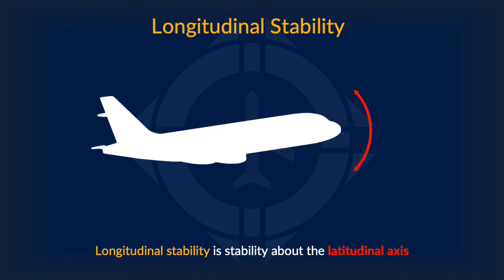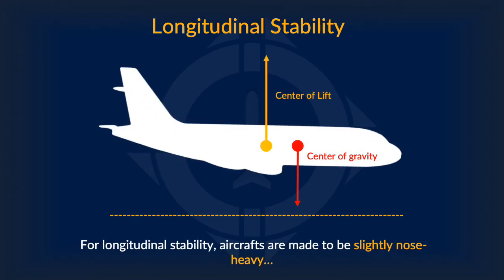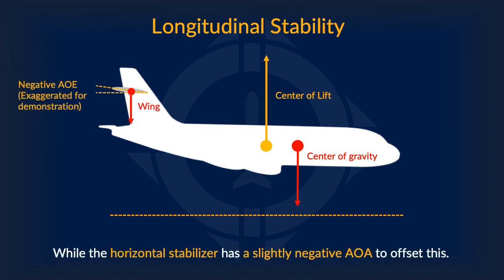So how can we improve the longitudinal stability of an aircraft? One thing aircraft designers do is make the aircraft slightly nose heavy. This would usually be undesirable as it means the airplane has a tendency to flip forwards due to the distance between the center of lift and the center of gravity. To offset this, the horizontal stabilizer at the back of the airplane has a slightly negative angle of attack, providing negative lift that cancels out the tendency to nosedive.